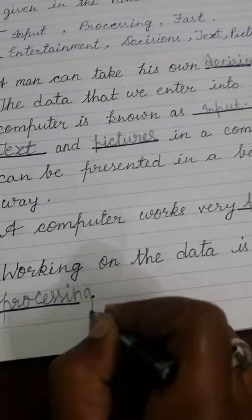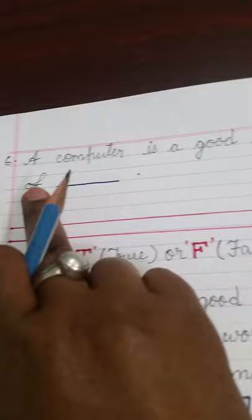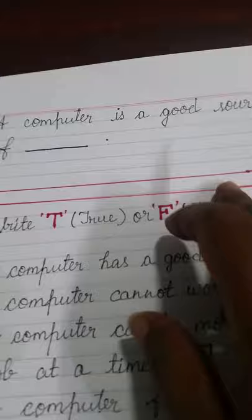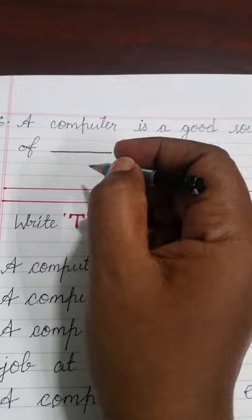Next question. Question number 6: A computer is a good source of dash. Who is entertainment? Entertainment.